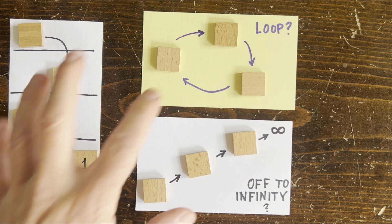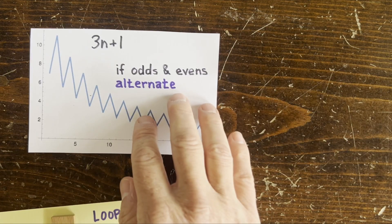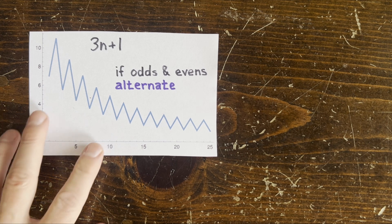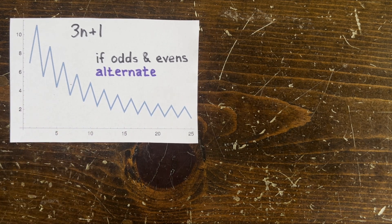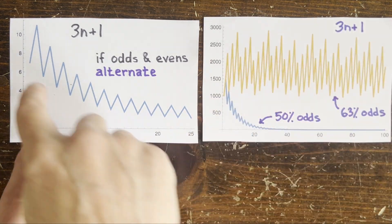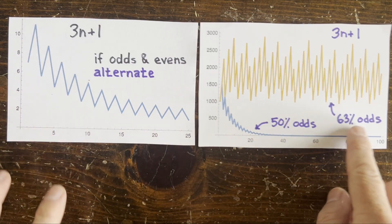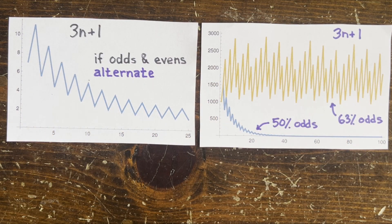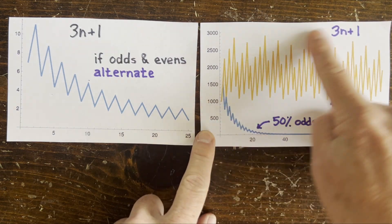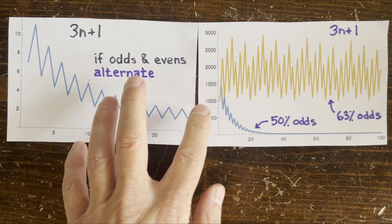It's reasonable to think that no numbers diverge. For example, if odds and evens alternated, then a 3n+1 trajectory would look like this. After each pair of steps, you're lower and lower. In fact, you need about 63% odds just to stay above water. So for a start number to be divergent, its trajectory needs more than 63% odds.